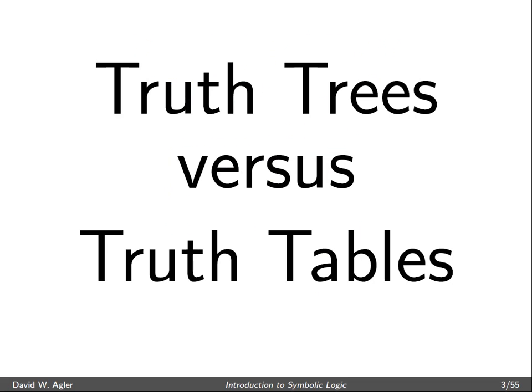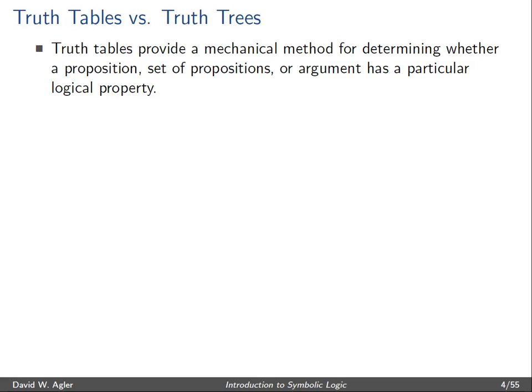So the first place to start is to talk about how truth trees differ from truth tables. One thing to note is what a truth table is. A truth table provides a mechanical means for determining whether or not a proposition, set of propositions, or argument has a particular logical property.